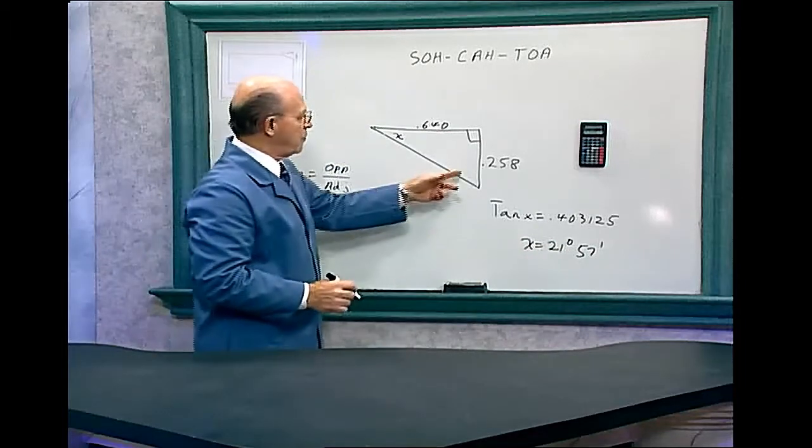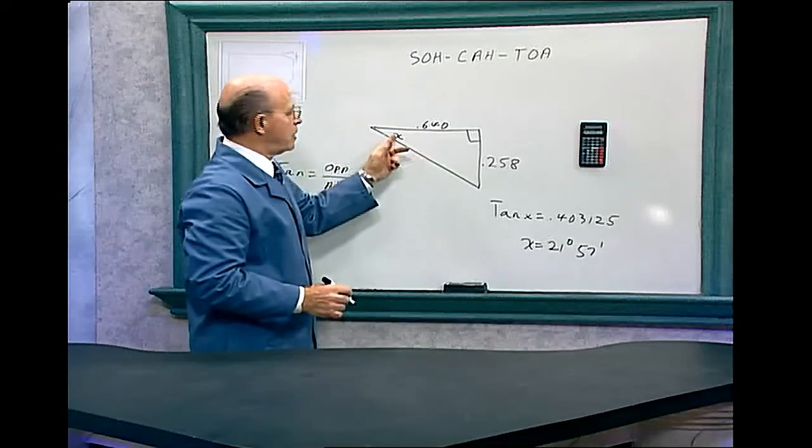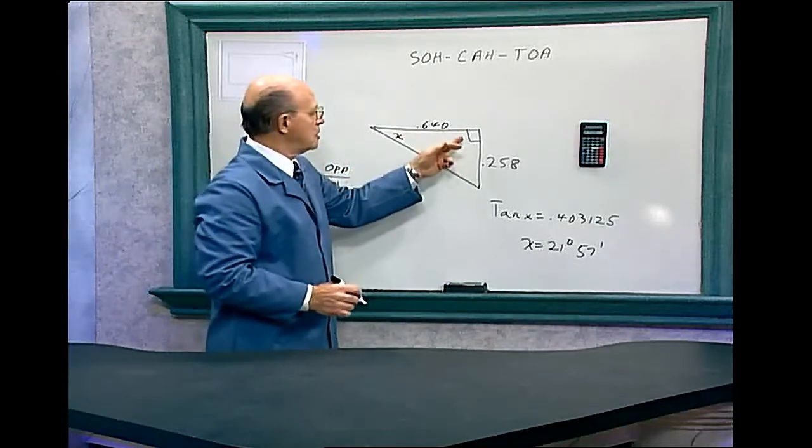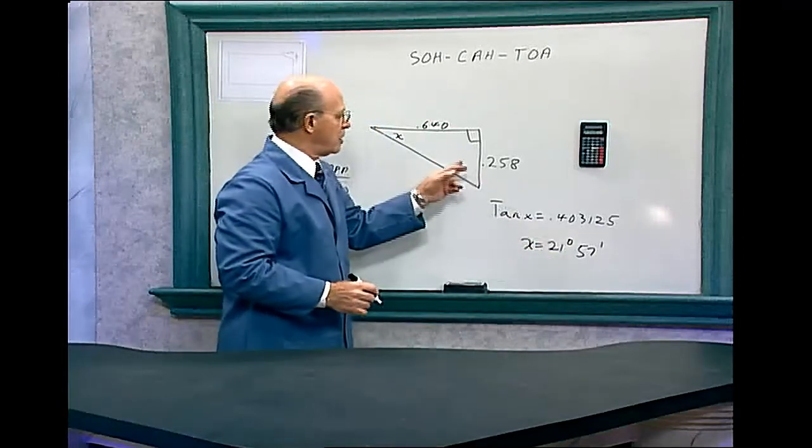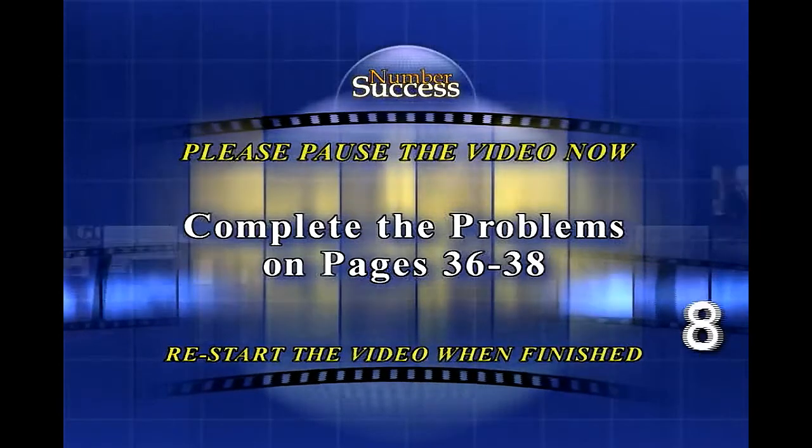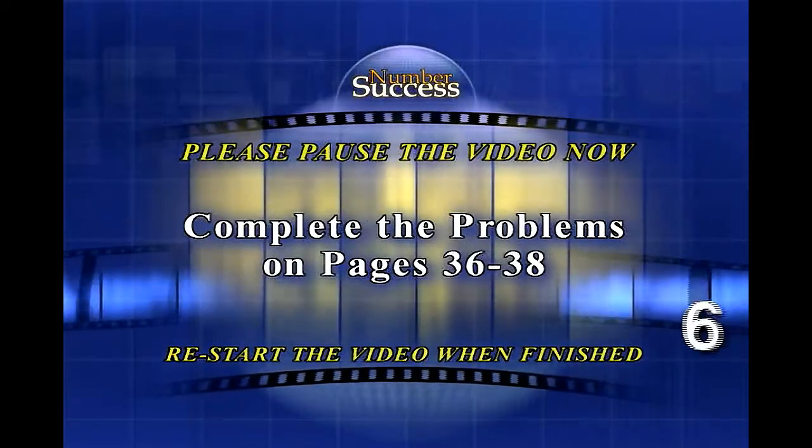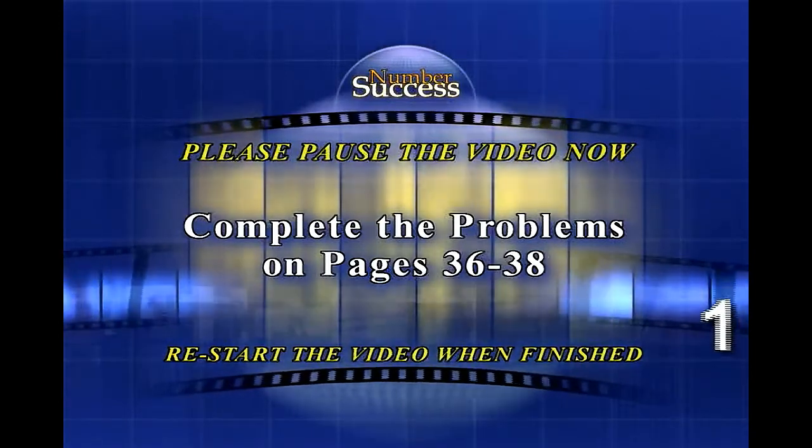And if we wanted to find this angle, all we would have to do is take 180 degrees because that's the sum of all the angles in a triangle. Deduct 90 and 21 degrees 57 minutes and we'll give you this angle. Please pause the video now and complete the problems in your workbook. When finished, press play and we'll continue with the next lesson.